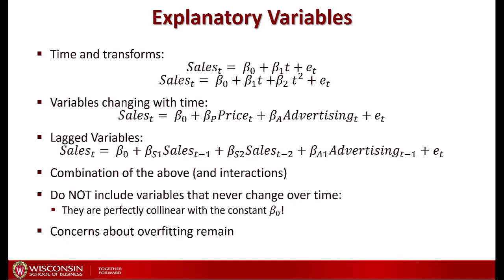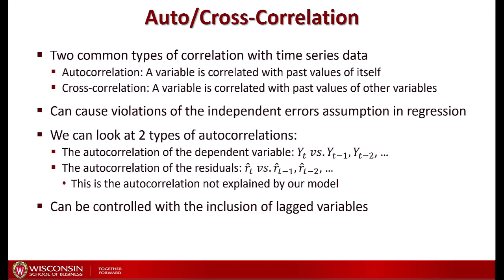Be careful: do not include any variable that never changes over time. Such variables are perfectly collinear with the constant β₀ in the model, making it impossible to estimate either β₀ or the coefficient for that variable. If you are including many variables — many lags, many transforms of time, or many other explanatory variables — you still face the issue of overfitting, and you can use the same methods already covered in this course.